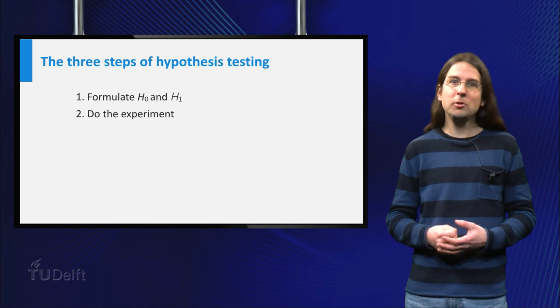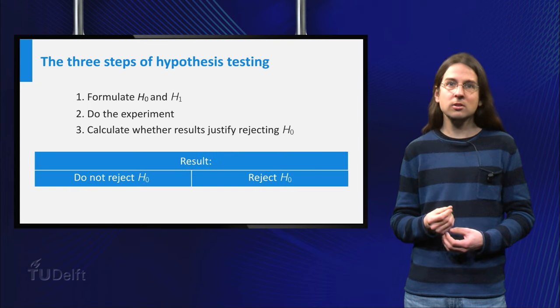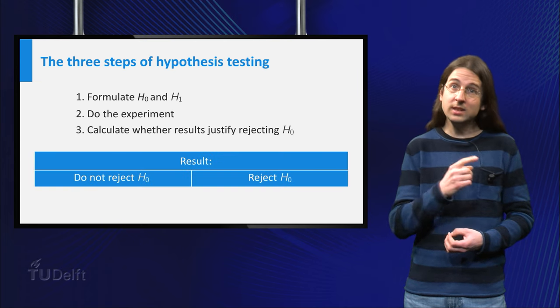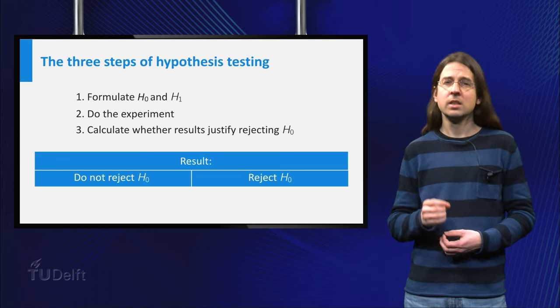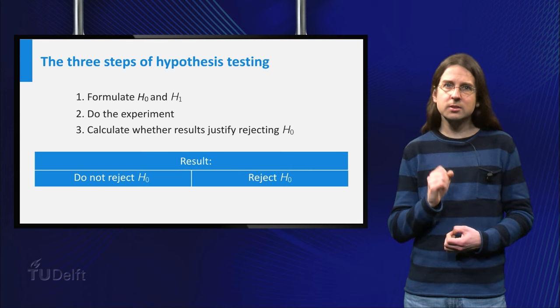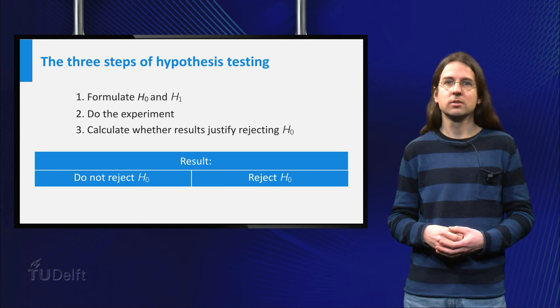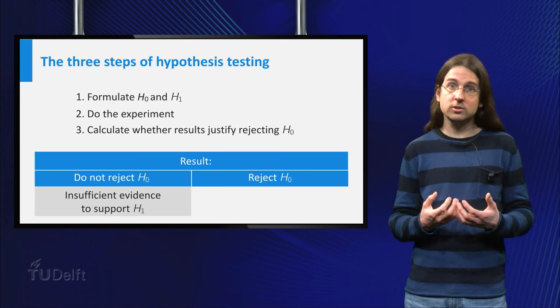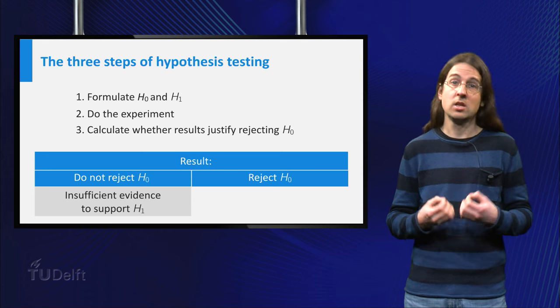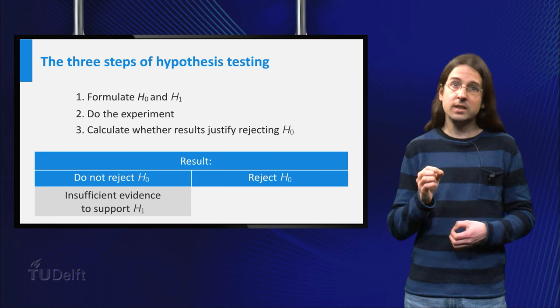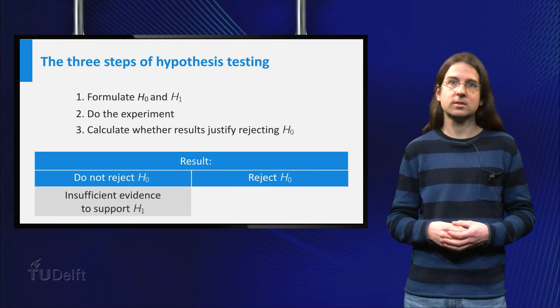After performing the experiment, you have to check whether the results are sufficient to reject H0 and assume H1 is true instead. Here we truly take H0 to be the default position. If the results obtained could have happened with reasonable probability assuming H0 is true, then we do not reject H0.